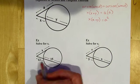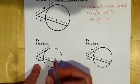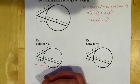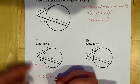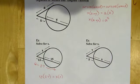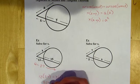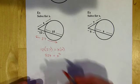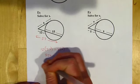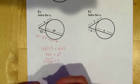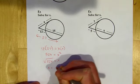The part on the outside is 12, and the whole thing is 27 — adding 12 and 15. So 12 times 27 equals X squared. 12 times 27 comes out to 324. So 324 equals X squared. Taking the square root of both sides — 324 is a perfect square — gives X equals 18.